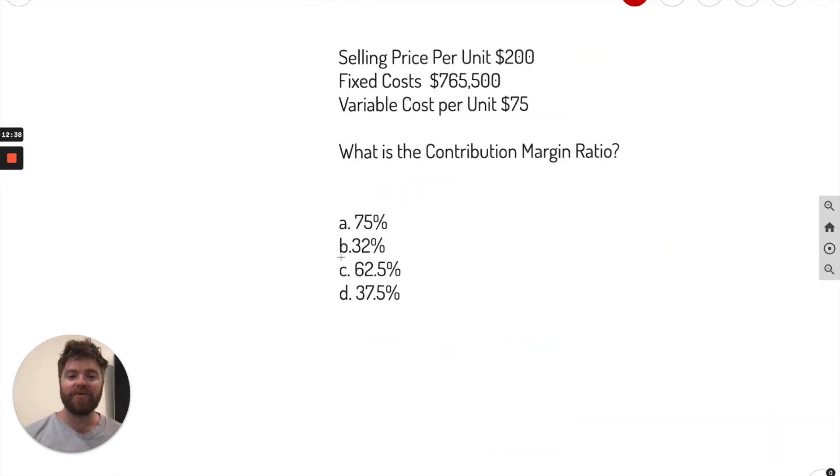Okay, next problem here. So it's asking, what is the contribution margin ratio? Contribution margin, well we know contribution margin is sales minus variable costs. That is your margin. Then you take your margin divided by sales. And that is your ratio. Percentage, ratio, same thing.